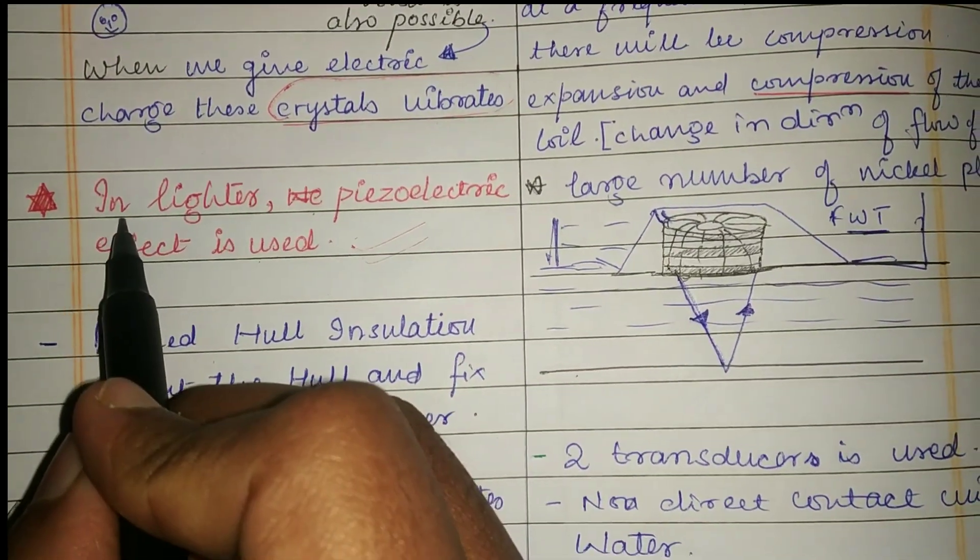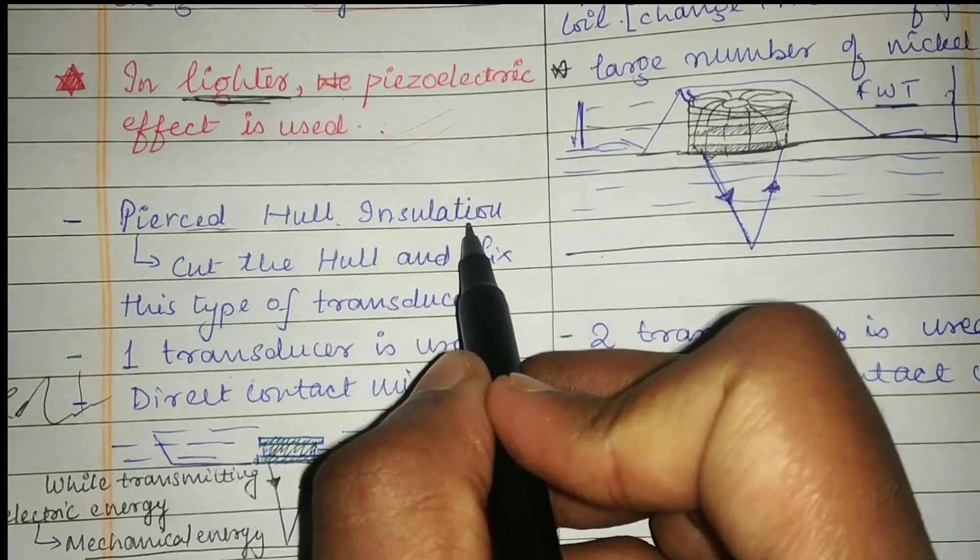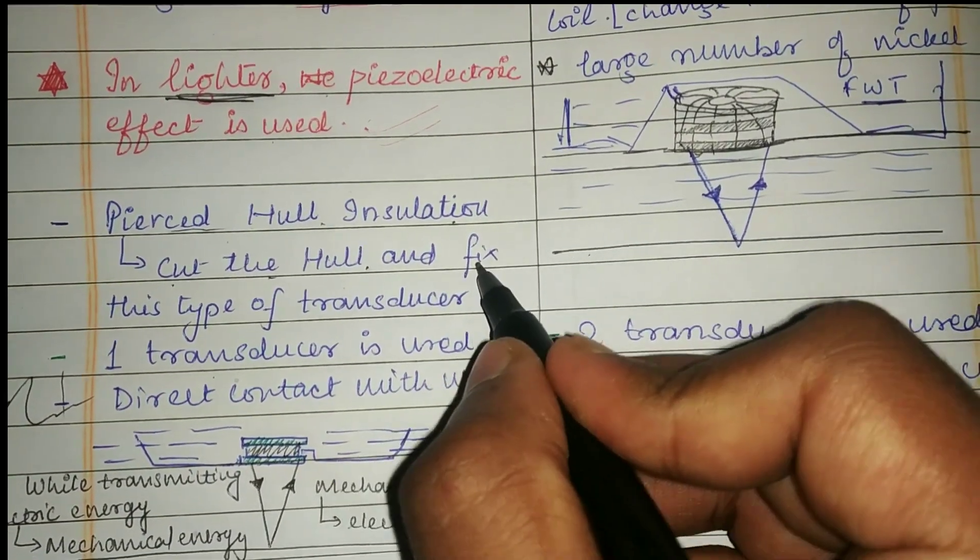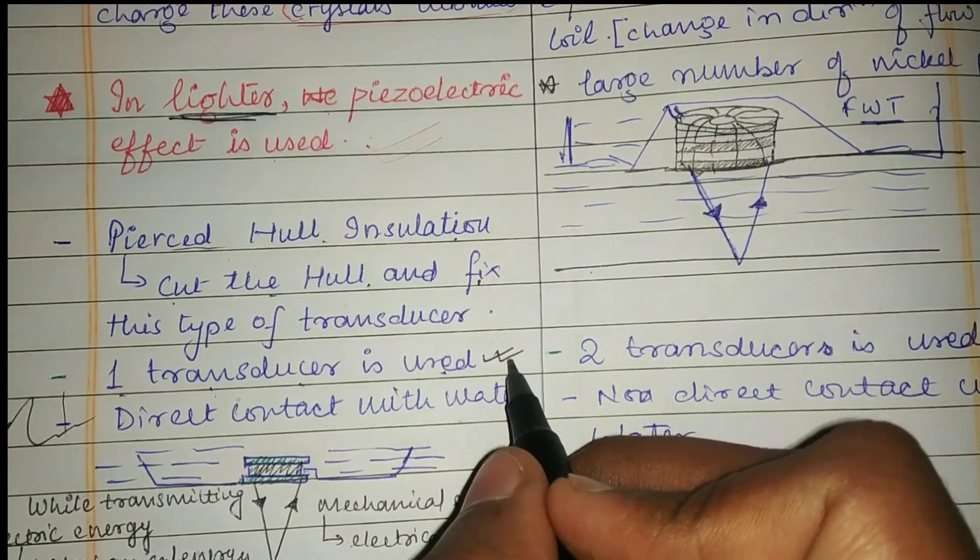The piezoelectric effect is also used in lighters. In piezoelectric effect, we have pierced hull installation. What does this mean? A part of the hull is cut and these transducers are fixed over it. One transducer is used for both transmission and reception.